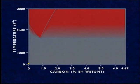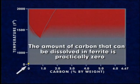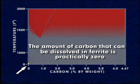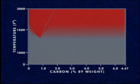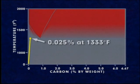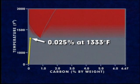At room temperature, the solid solubility — or the amount of carbon that can be dissolved in ferrite — is practically zero. The amount of carbon dissolvable in ferrite increases to only a maximum of 0.025 percent at 1,333 degrees Fahrenheit.